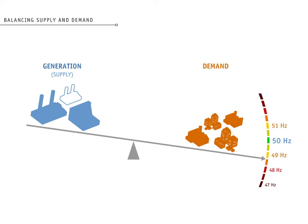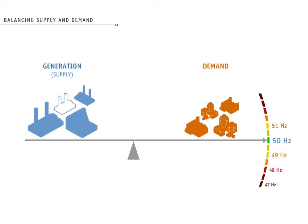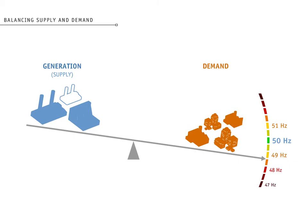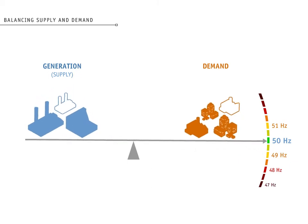In this situation, we have two options to restore the balance. We can either increase supply by adding generation, or we can decrease demand by removing the supply to some of our customers. This is called shedding load.